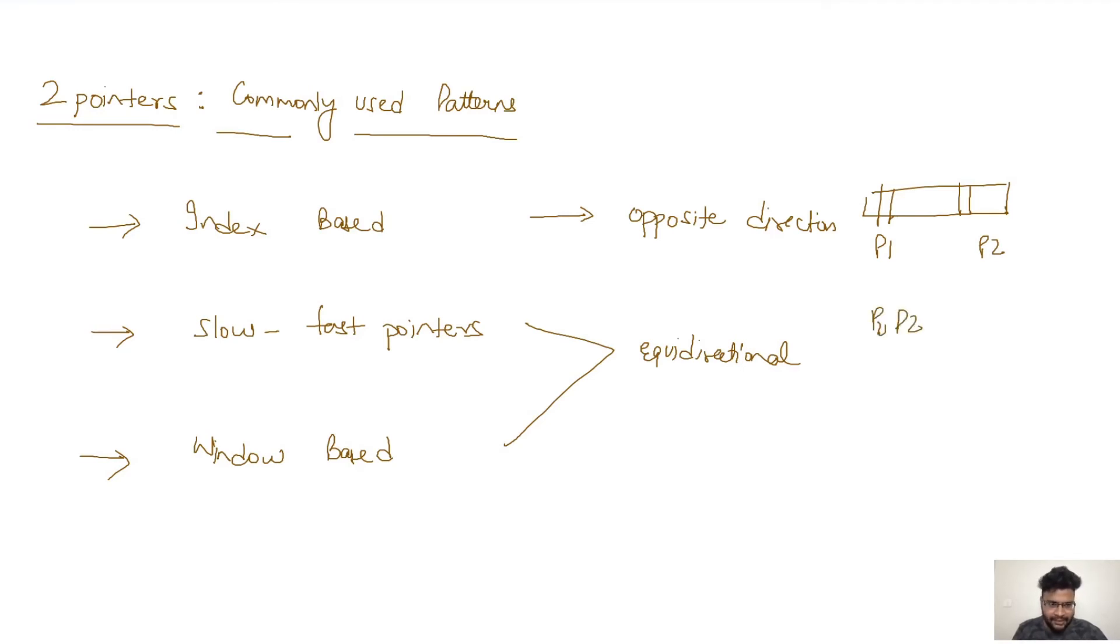They both move in similar direction but one of them will move faster than the other. In index based, the direction in which the pointers are moving are going to be opposite.